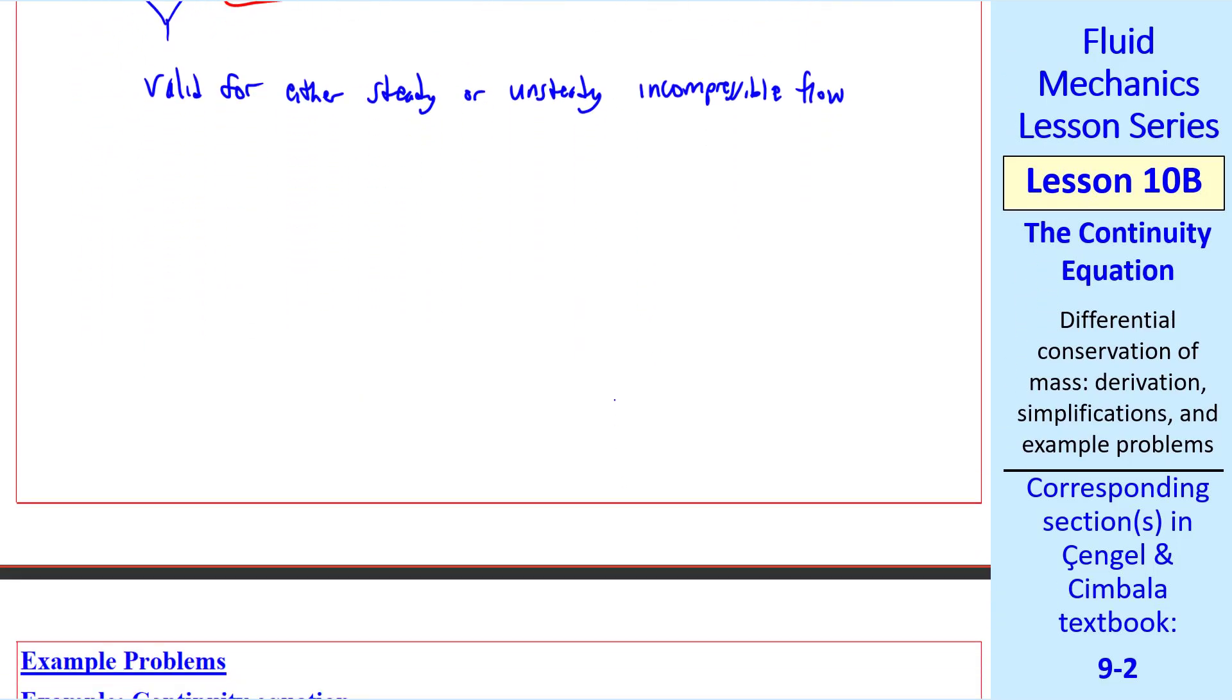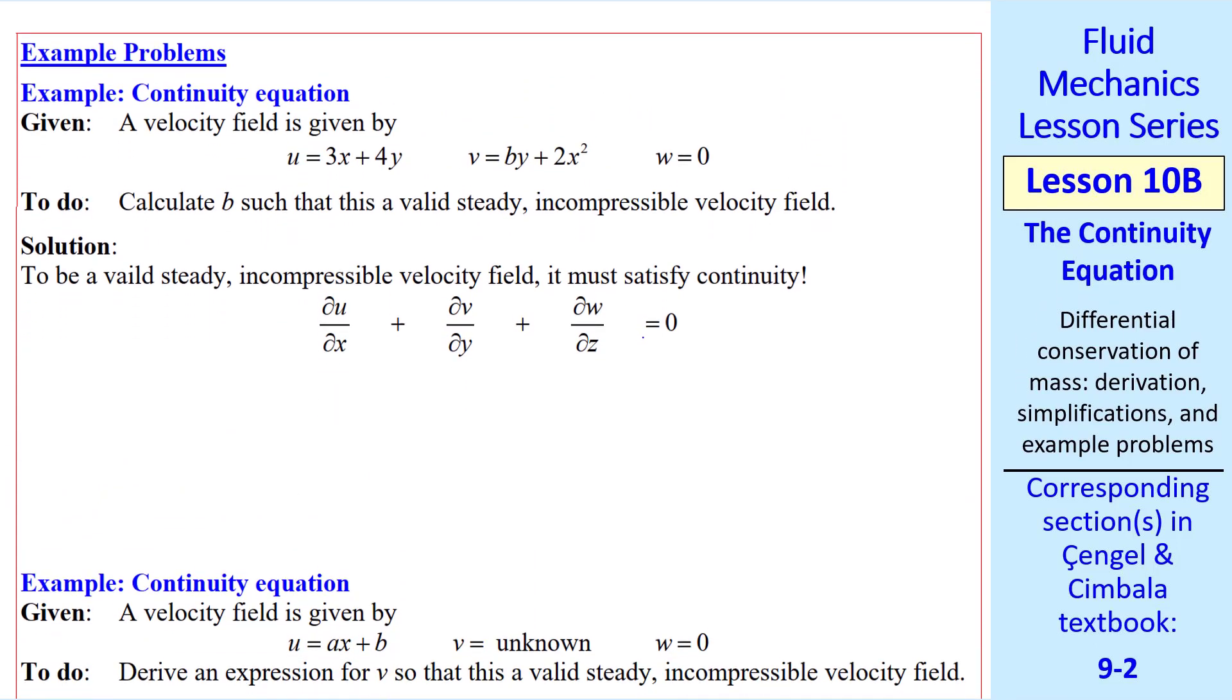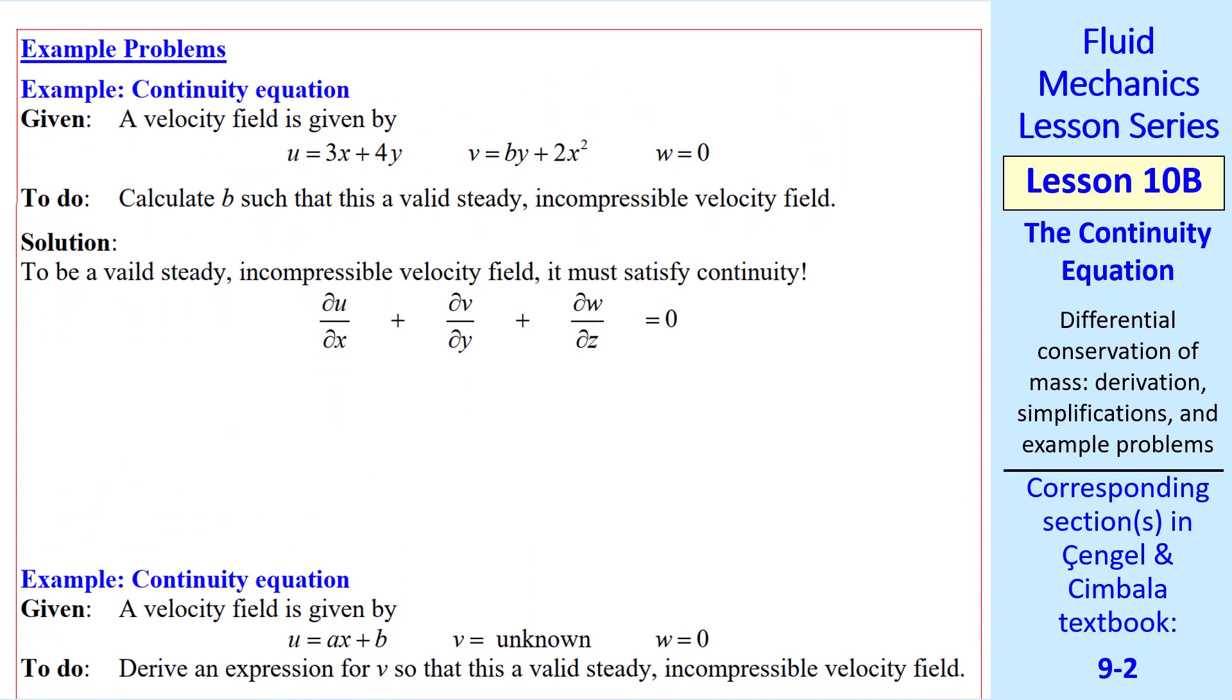Now we're ready to do some examples. Suppose we have a velocity field in Cartesian coordinates. The x component, y component, and z component of velocity are given. We want to calculate this variable b such that this velocity field is valid for steady incompressible flow. Well, to be a valid steady incompressible velocity field, it must satisfy continuity, which I rewrote here.